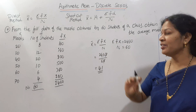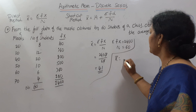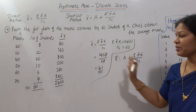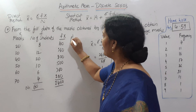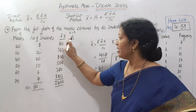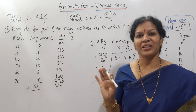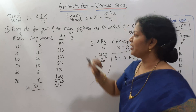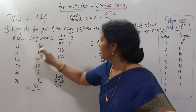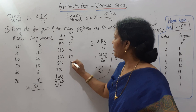Now let's see the indirect method. The formula is X̄ = A + ΣFD / N. Frequency is given; we need to calculate D, where D = X − A. A is the assumed mean. Let me assume A = 20 so I get all positive values. Then D values are: 20 − 20 = 0, 30 − 20 = 10, 40 − 20 = 20, 50 − 20 = 30, 60 − 20 = 40, 70 − 20 = 50.